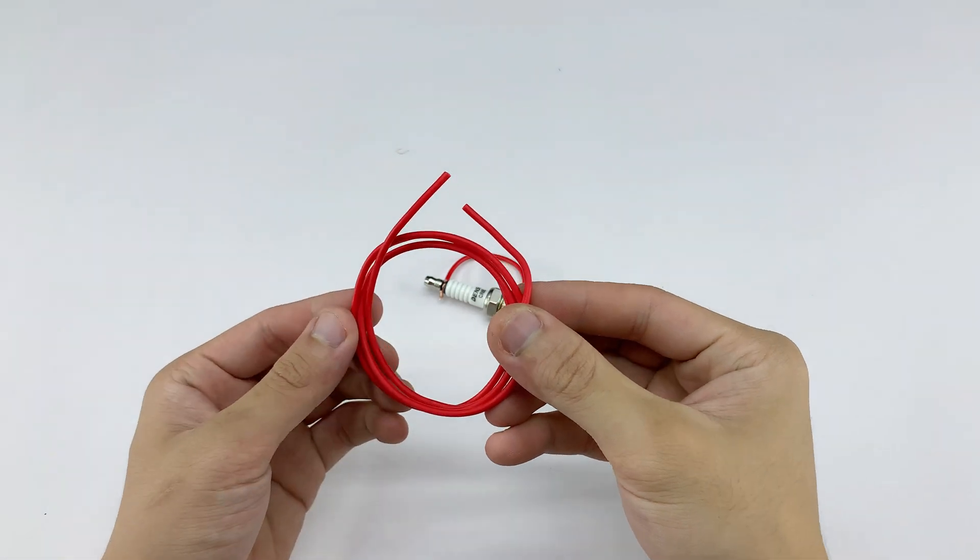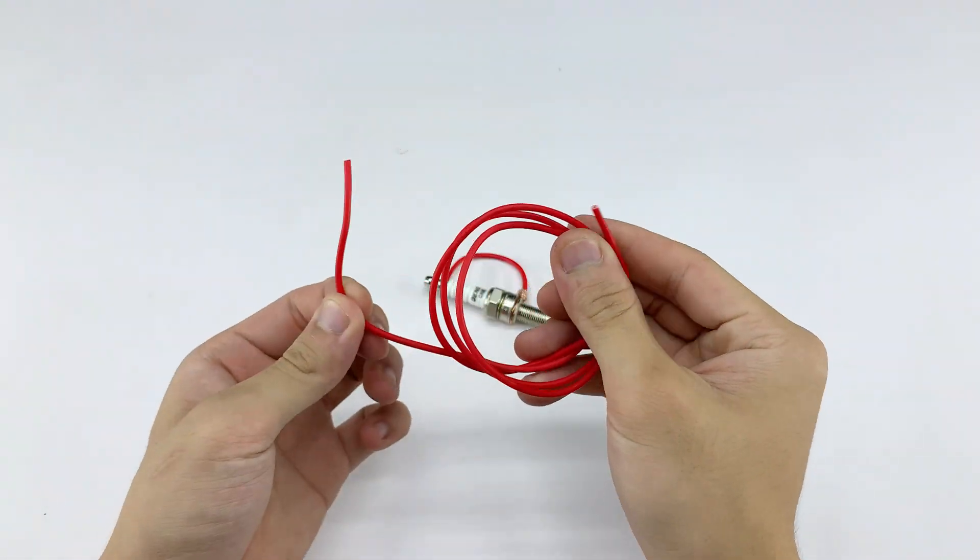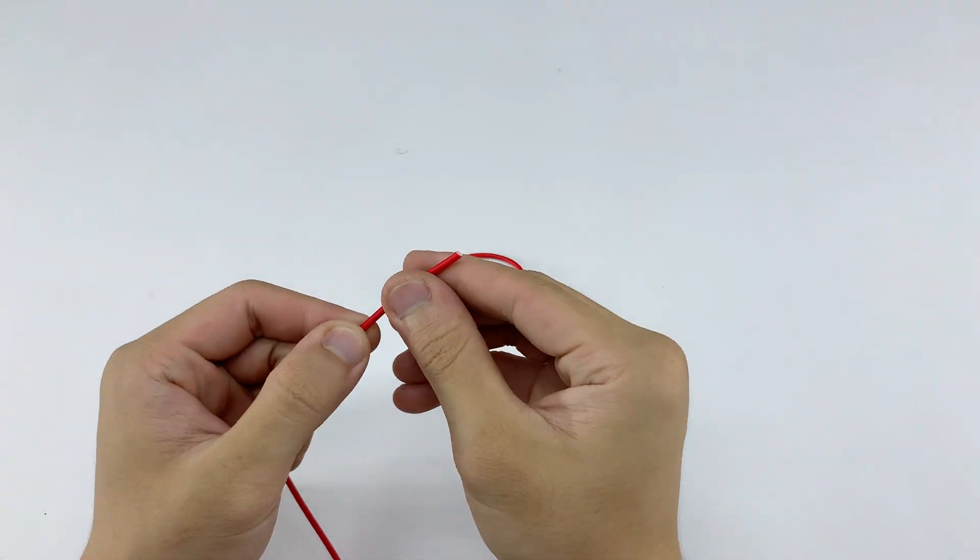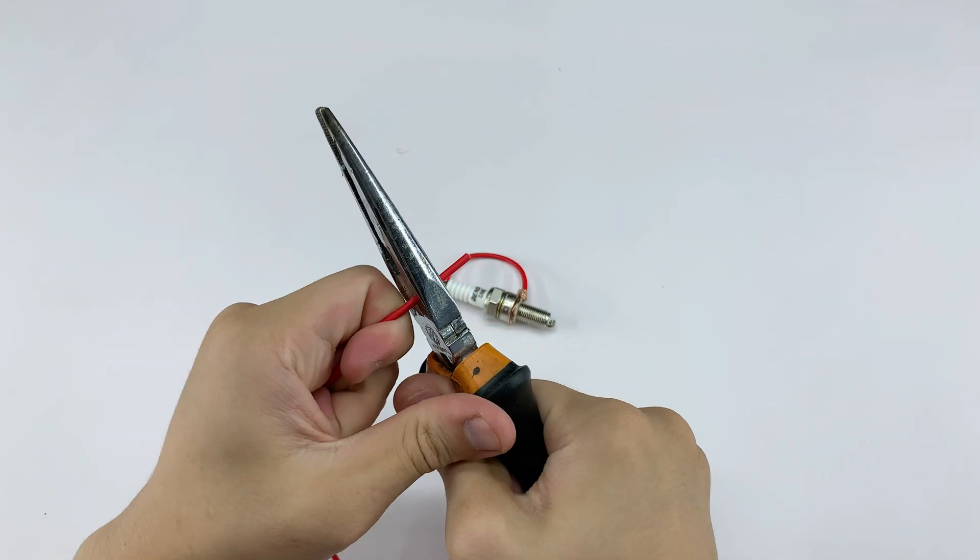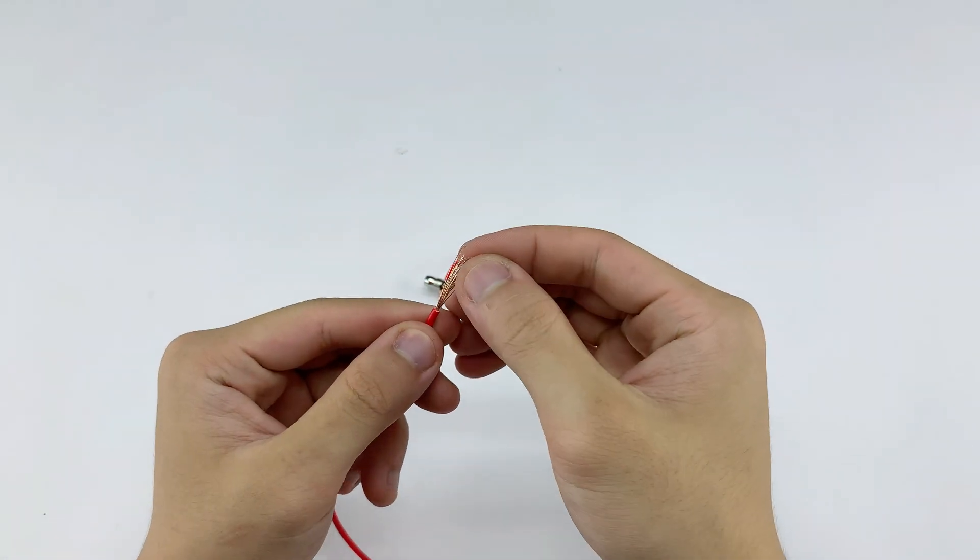Next, we'll connect one end of the wire to the spark plug's ground terminal. This directs the electricity properly so the spark fires strong and steady. Make sure it's secure, safe but firm enough. Small step but very important.